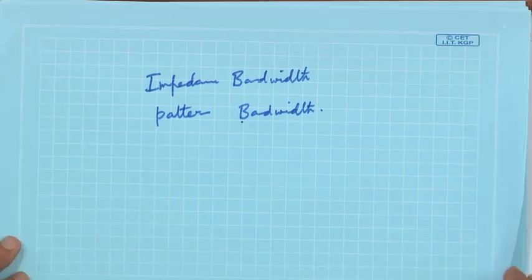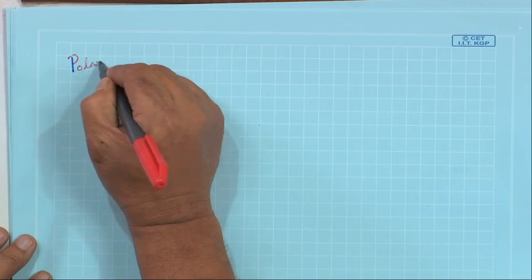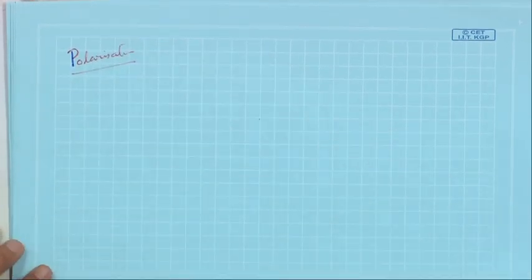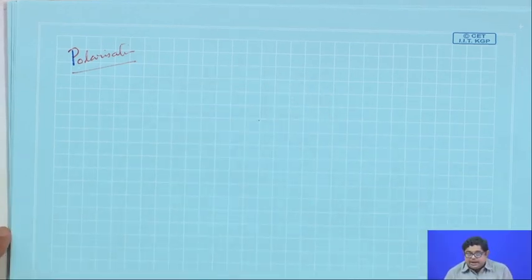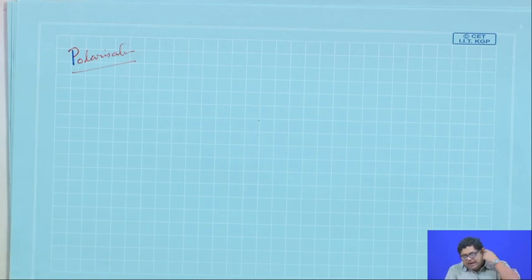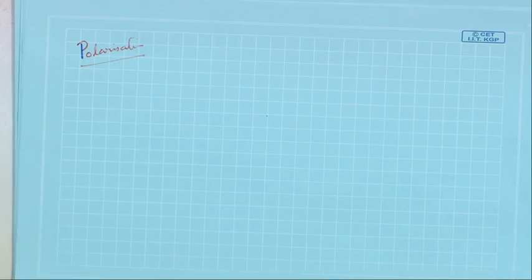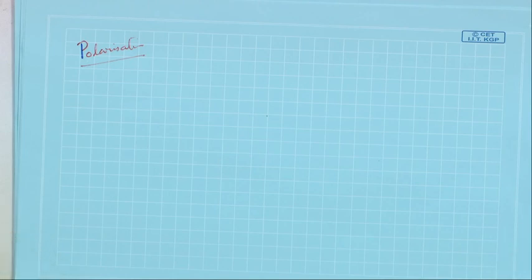The next concept to be introduced is polarization, but time is up for this lecture. So, in this lecture, we have seen the concept of efficiency in antennas — particularly the subtle difference between the gain function and the directivity function — along with various efficiencies. After that, we have seen the concept of beam width and the concept of bandwidth. These three antenna parameters were covered today; more antenna parameters will be seen in the next lecture.